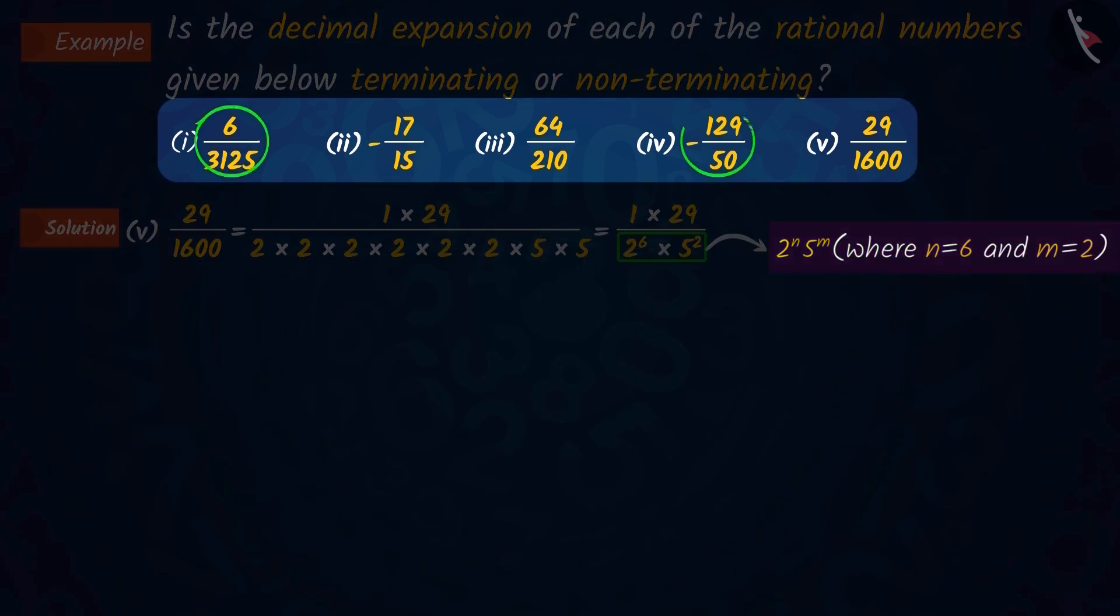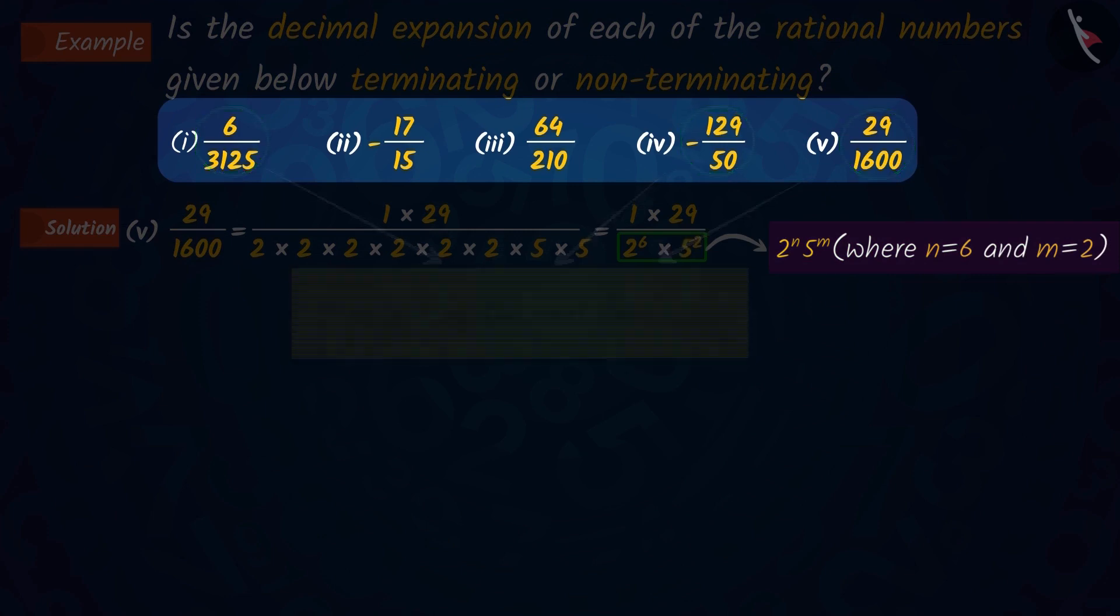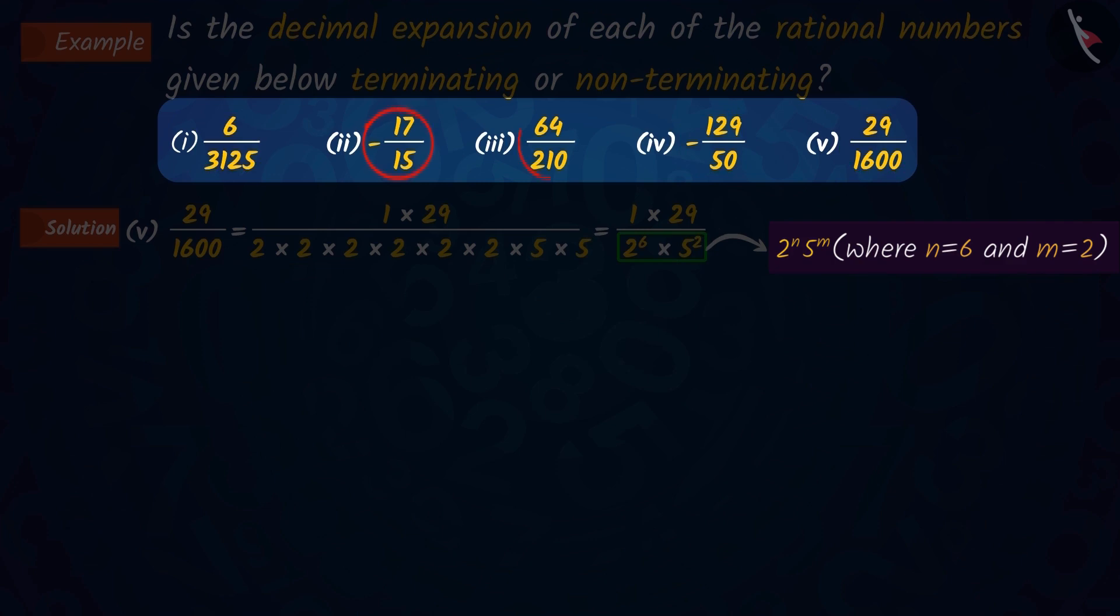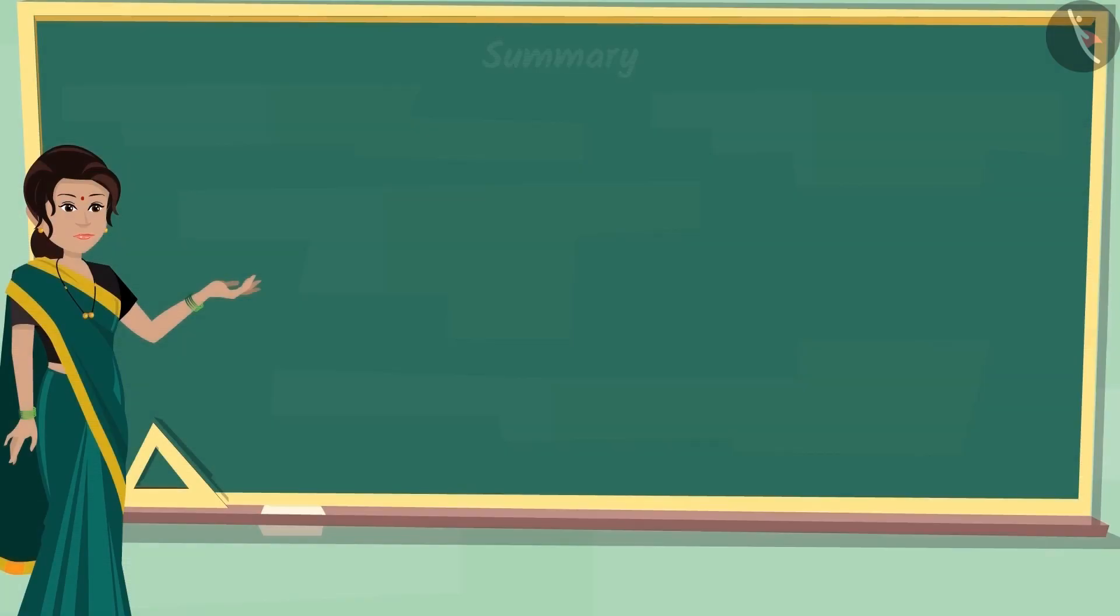So, the decimal expansions of the 1st, 4th and 5th rational numbers will be terminating. And the decimal expansions of the 2nd and 3rd rational numbers will be infinitely recurring, i.e., non-terminating.